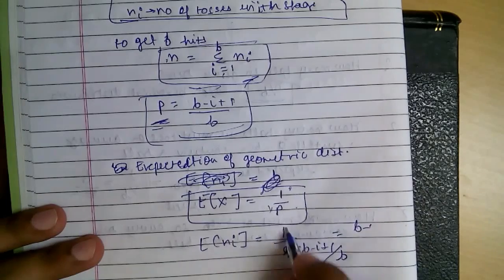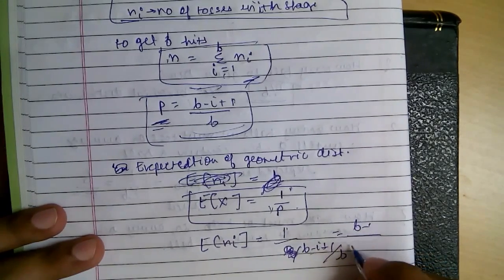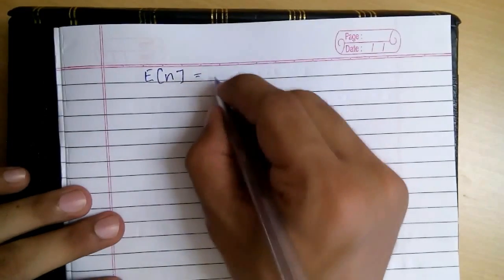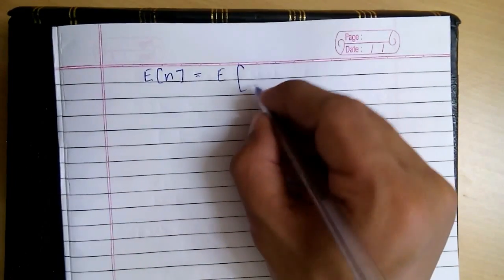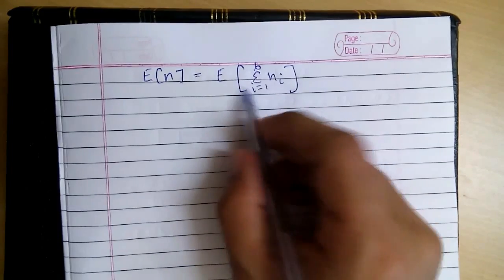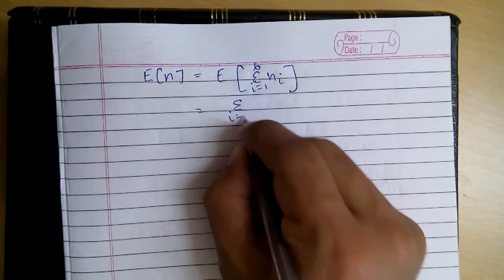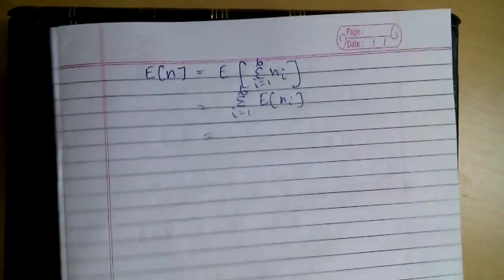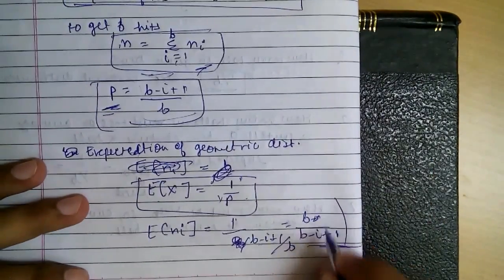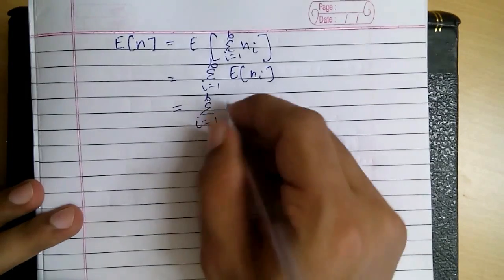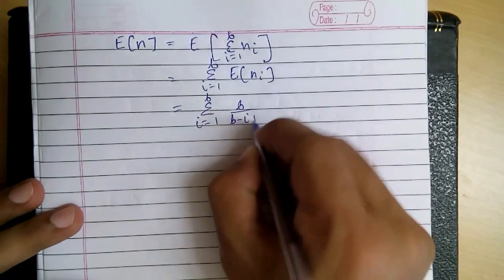So E of Ni equals B by B minus i plus 1. So for those n tosses, E of N, we will be summing it for i equal to 1 to B. So sigma i equal to 1 to B of B by B minus i plus 1.